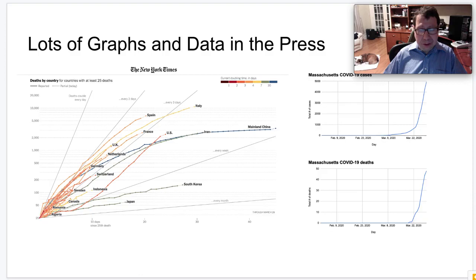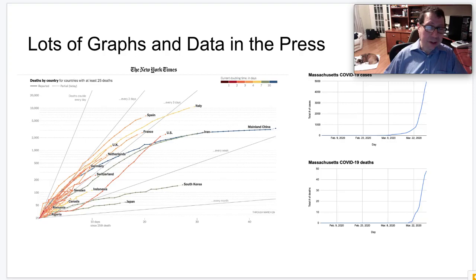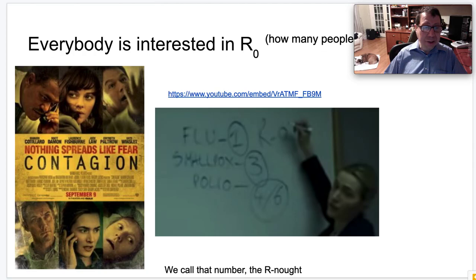MIT very quickly took the steps that certainly were the right steps: shut down classes and sent everybody home, hopefully to be safe and healthy. If you look at the newspapers these days — I picked a few from the New York Times and the Boston Globe — there are tons and tons of data and statistics for all sorts of trends by country, by date, in your local area. We're being swamped with data, and probably every one of us is trying to make heads or tails of it all.